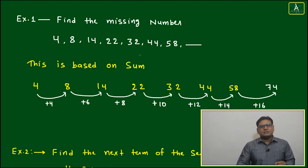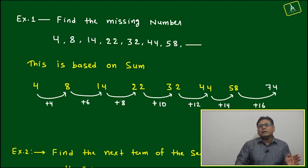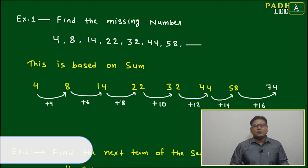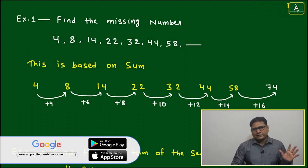First we'll check if numbers are near to any perfect square or perfect cube. Then most of the time it will be related to some addition or subtraction. Addition may not be fixed; it may follow some arithmetic progression.